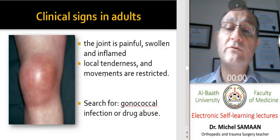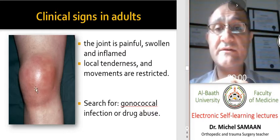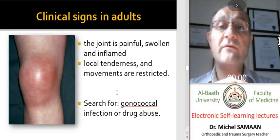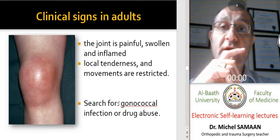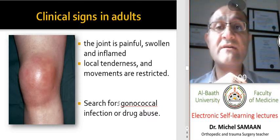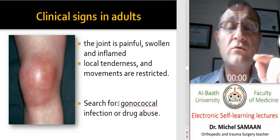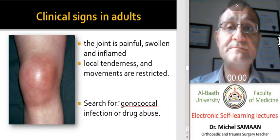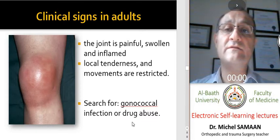In adults, usually we have a swollen, painful, and inflamed joint and all movements are restricted. If we have hematogenous septic arthritis in adults, especially monoarthritis, we should search for gonococcal infection.